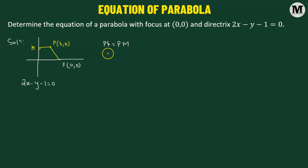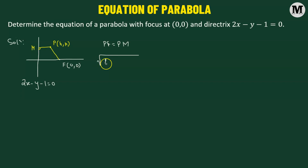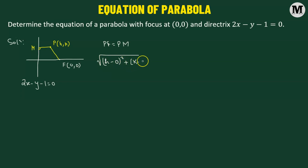Now let's find the distance PF. We'll take the square root and apply the distance formula. Underneath the square root, we first consider the difference of the x-coordinates: h minus 0, squared. Then we add the square of the difference of the y-coordinates: k minus 0, whole squared. This equals PM.